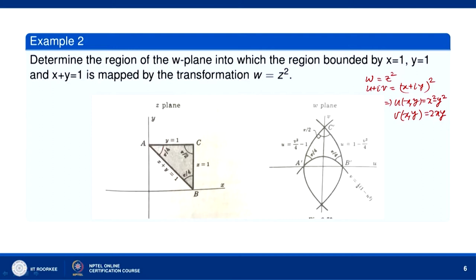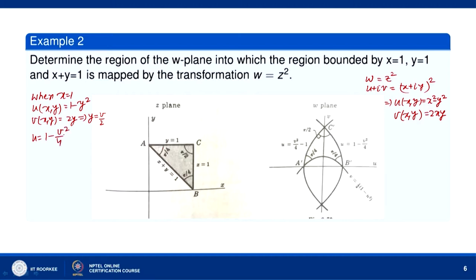Let us find the image of each side. When x = 1: u = 1 - y² and v = 2y, so y = v/2 and substituting gives u = 1 - v²/4. So x = 1 is mapped into the parabola u = 1 - v²/4, or equivalently v² = 4(1 - u). This parabola opens leftward, with vertex at (1, 0) and crossing the v-axis at (0, ±2).